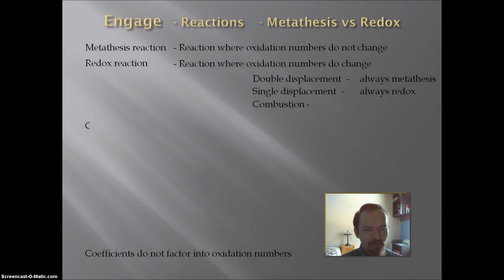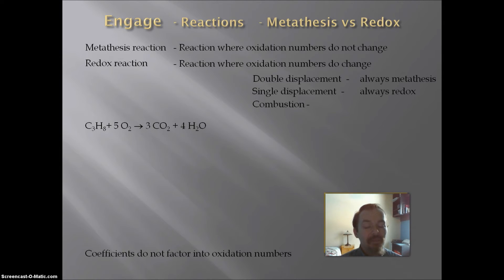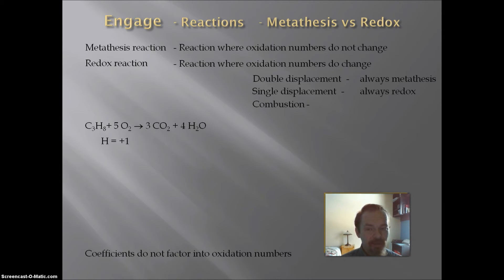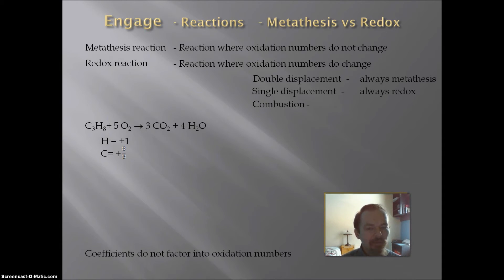Let's look at combustion reactions. A combustion reaction example is propane combusting in oxygen to give us carbon dioxide and water. In propane, hydrogen is bonded with a non-metal, so its oxidation number is plus 1. With 8 hydrogens and 3 carbons, the 3 carbons plus 8 must equal 0, so carbon has an oxidation number of positive 8/3. O₂ is the elemental form of oxygen, so oxygen has an oxidation number of 0.